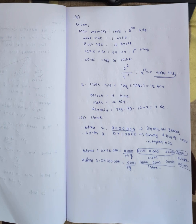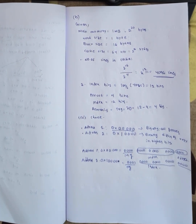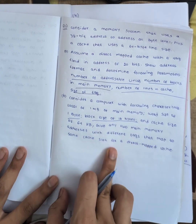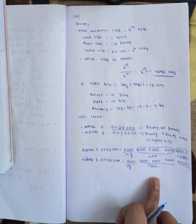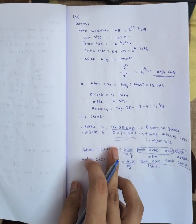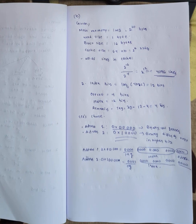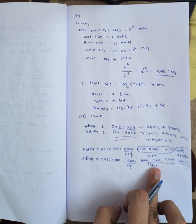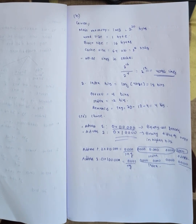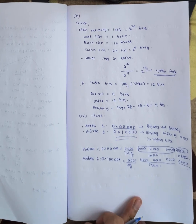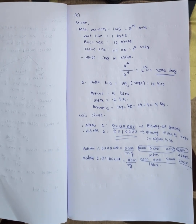This satisfies the question requirement: different tags mapping to the same cache slot. The key condition is: same index bits but different tag bits. You can take any other pair as well — just ensure same index and different tags. Thank you for watching. If you have any doubts, please comment in the comment section.